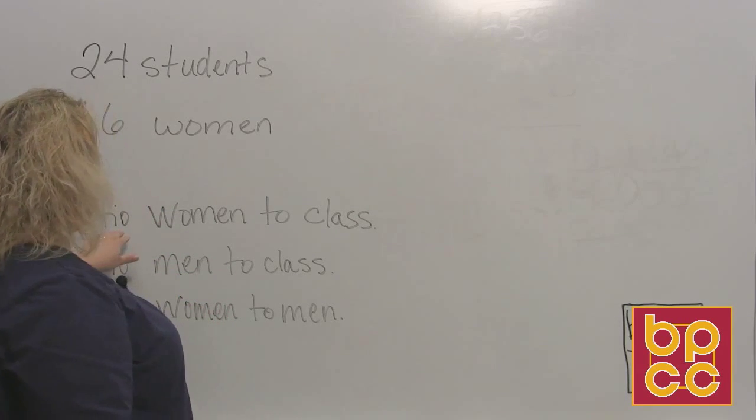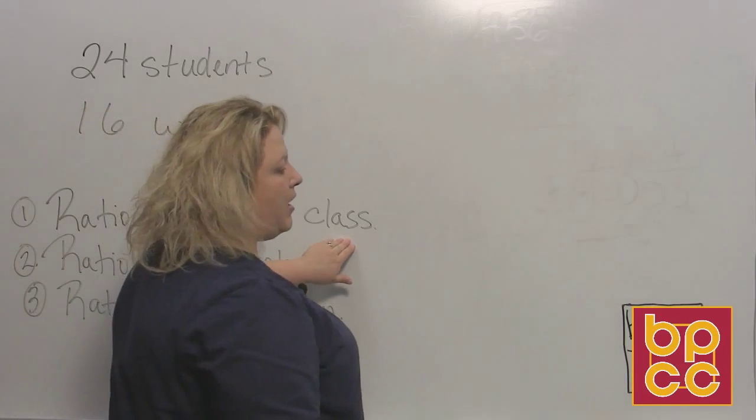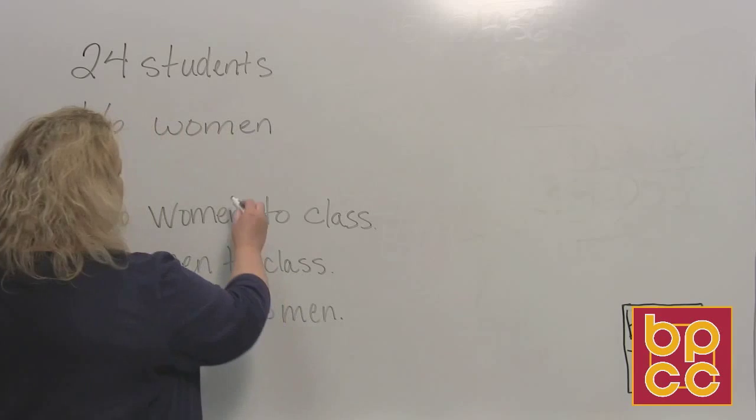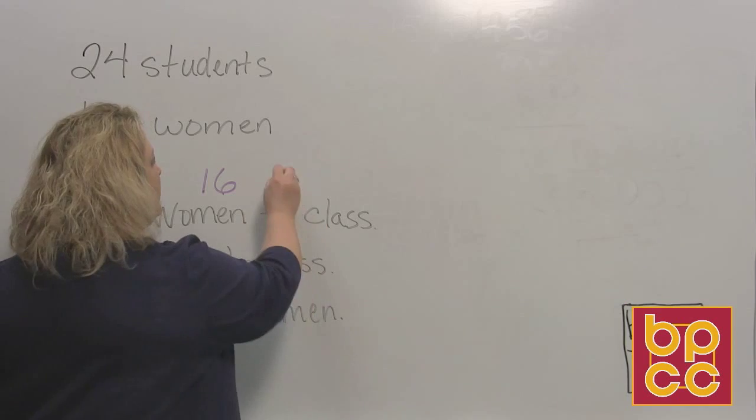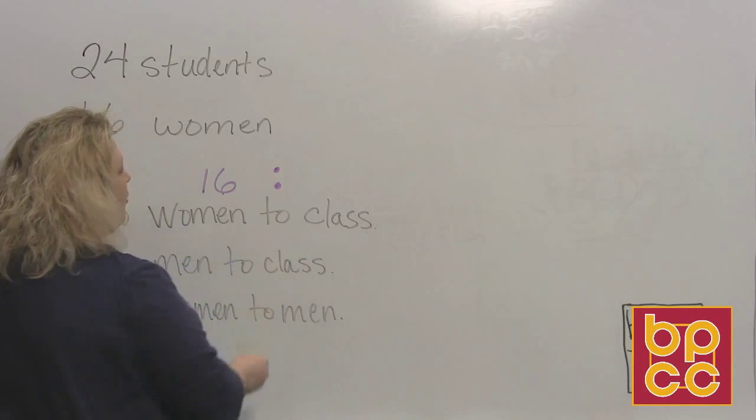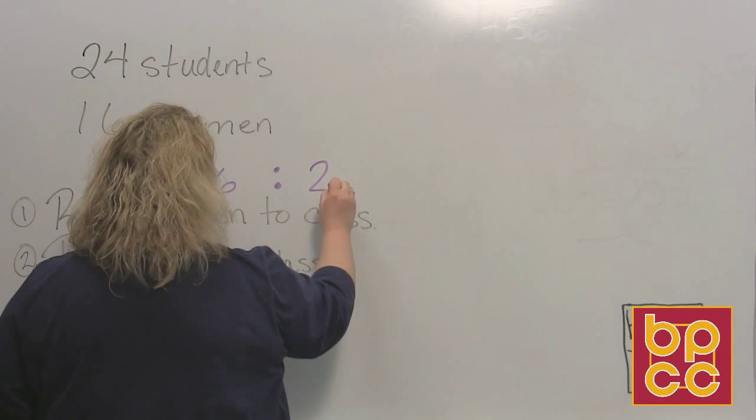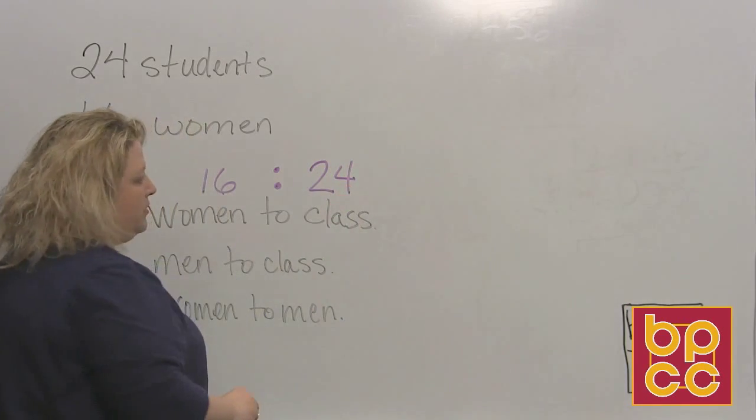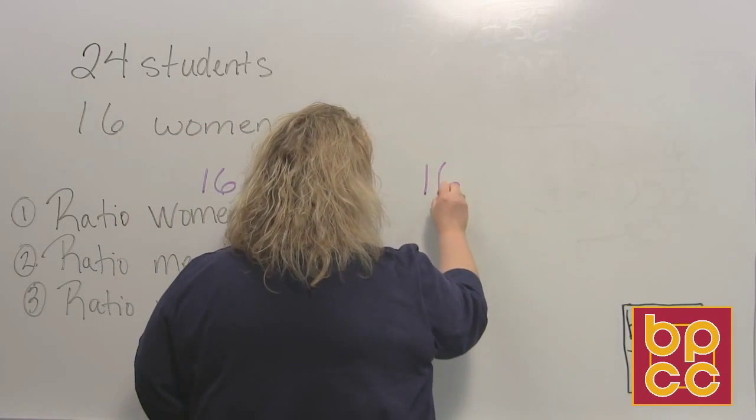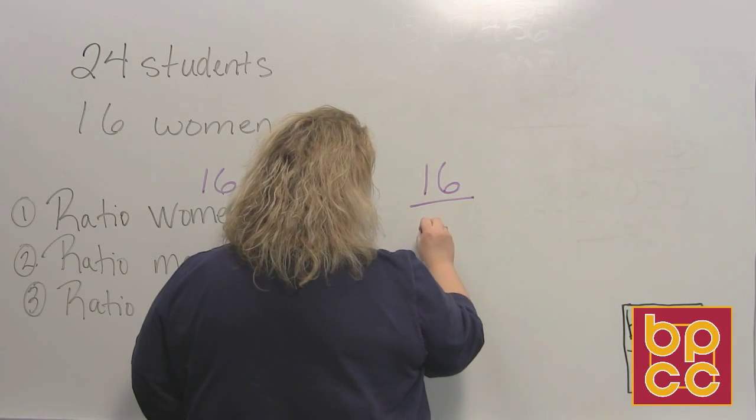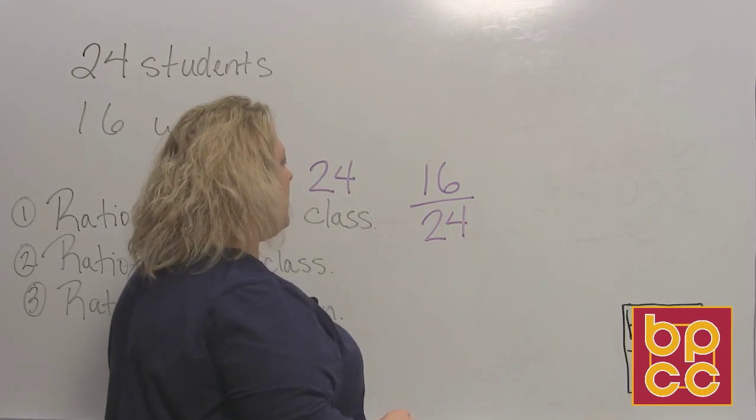Then I ask you, what is the ratio of women to the entire class? So there are 16 women, two, 'two' is where you either put the word 'to', you put a colon or you put a fraction bar, and the entire class, there are 24 students in the entire class. So if I was to turn around and write that as a fraction, that would be women on top and the entire student goes to the bottom, the entire class.